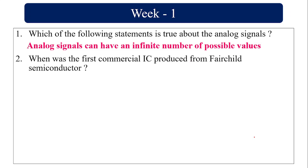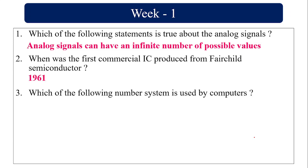When was the first commercial IC produced? From a child semiconductor zone — 1961. Which of the following number systems is used by computers? It's binary.